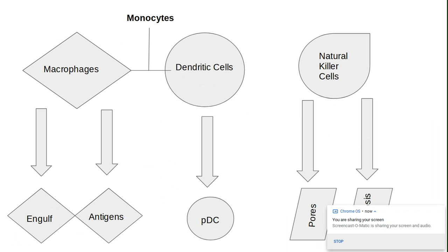Macrophages are widely distributed throughout the body in order to phagocytize microorganisms and foreign substances found within the bloodstream and tissues. They have the ability to bind to and engulf antigens, and they are often the first responders to invaders. Because of that, they play a large role in both the innate and adaptive immune response.